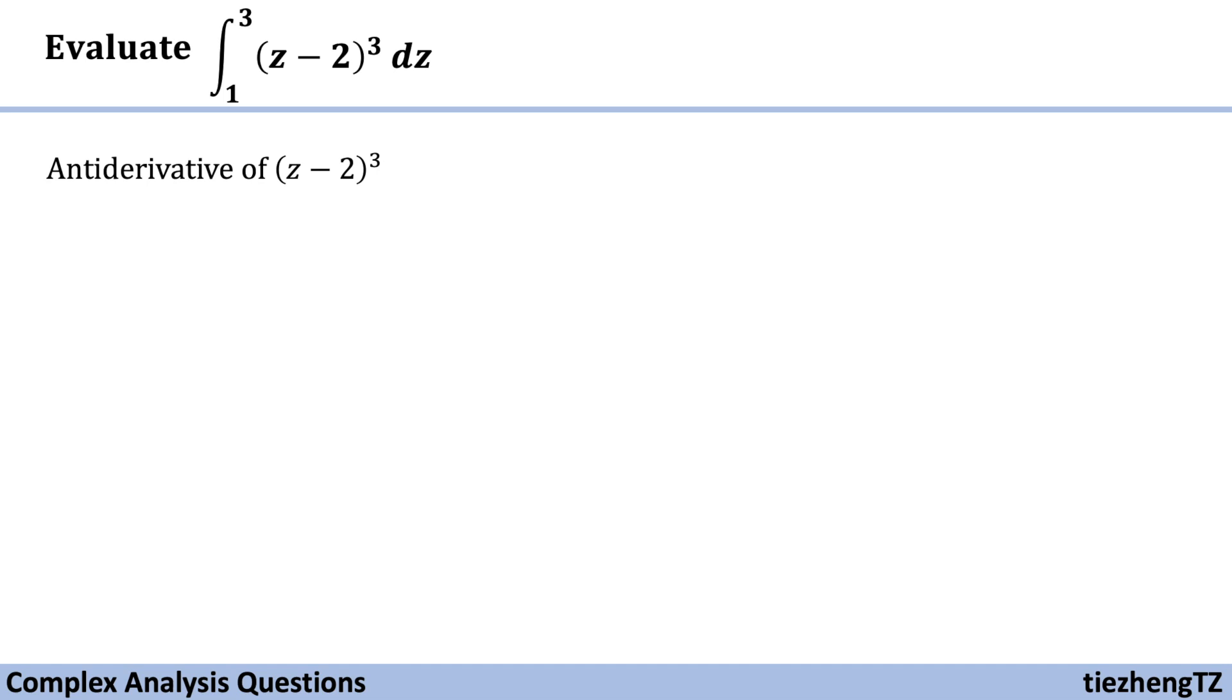So, the antiderivative of z minus 2 to the power of 3 is z minus 2 to the power of 4 over 4.